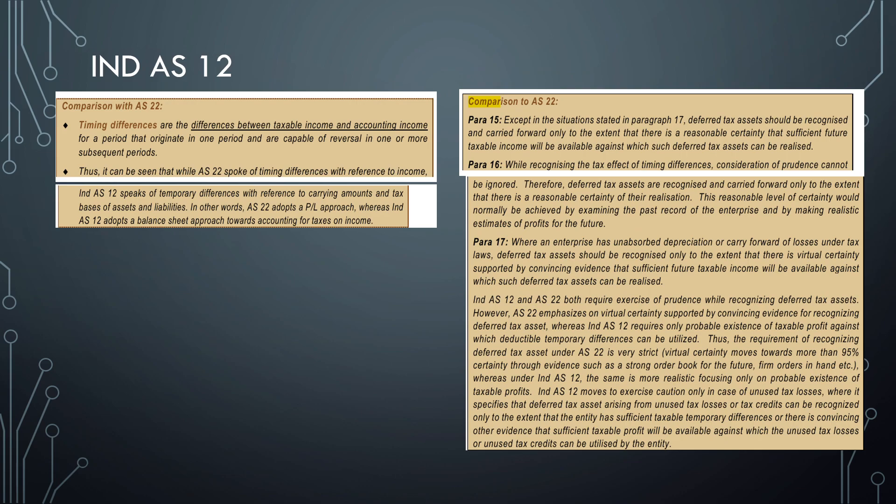Next one is IND AS 12 versus AS 22. Timing difference as you all know - in AS, the timing difference is based on income-based approach. But in IND AS 12, it's balance sheet-based approach. Then next one, Para 15 of AS 22: except in situation in Para 17, deferred tax should be recognized to the extent there is reasonable certainty.